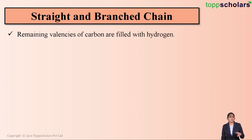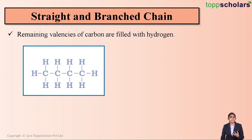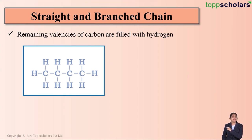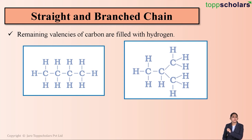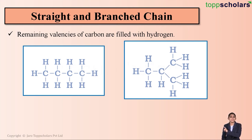Carbon compounds can be straight chain or branched chain. The valencies of the carbon atoms are fulfilled by hydrogen atoms. In the straight chain of butane, the carbon atoms are linked in a straight chain and their valencies are satisfied by hydrogen. In the branched chain structure of butane, three carbon atoms are linked in a straight chain and the fourth carbon atom is linked to the second carbon atom, resulting in a branched chain structure.